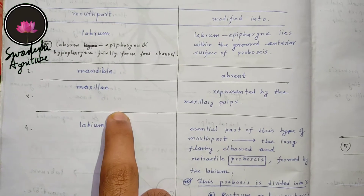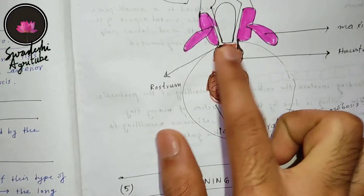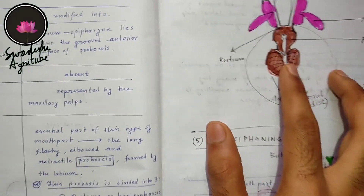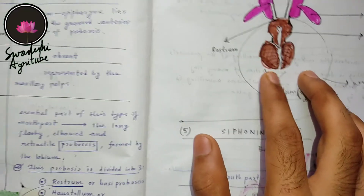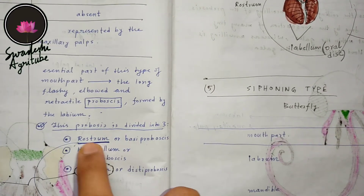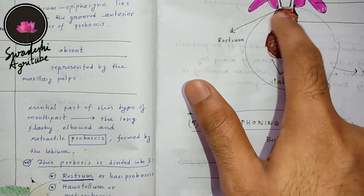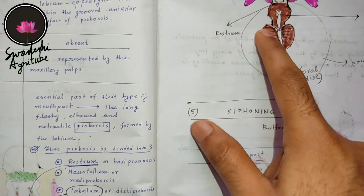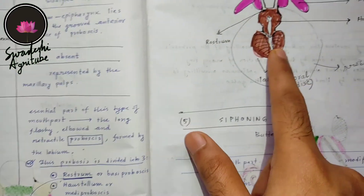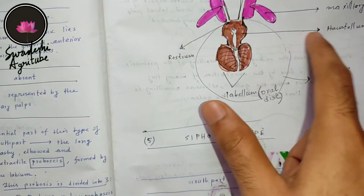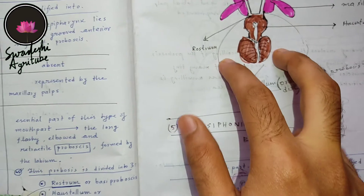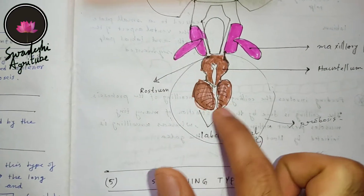The majority of the modification in the sponging type of mouthpart is in the labium. This brown structure you can see here is actually the modification of the labium, and this modification is called the proboscis. The proboscis is divided into three parts: first, the rostrum at the base; second, the haustellum; and third, the labellum. This whole structure is called the proboscis and is the modified version of the labium.